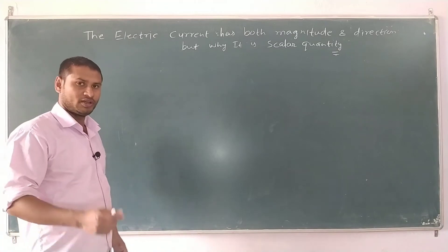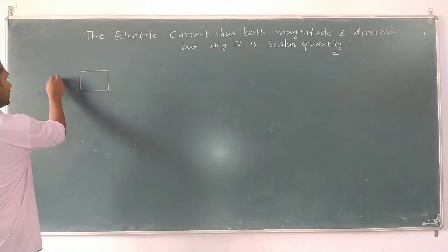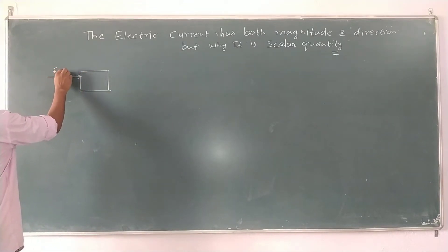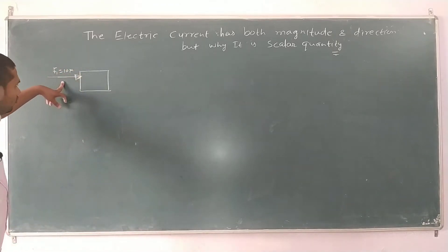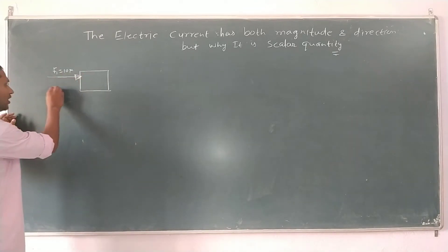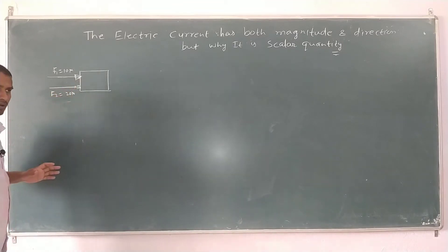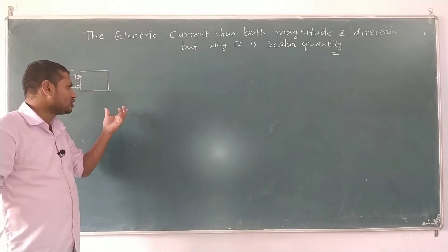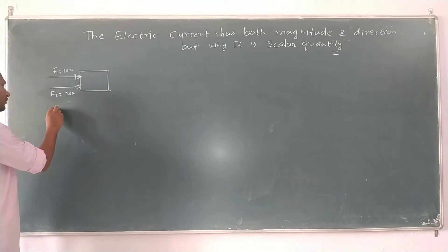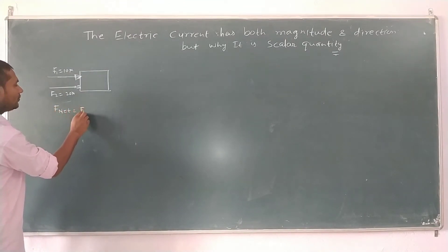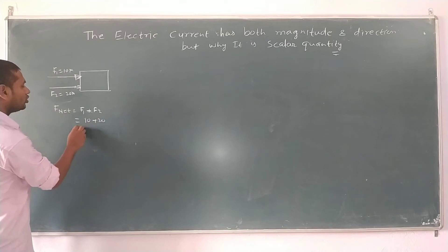First of all, we have to see what is the vector law of addition. Suppose there is a block, and a force F1 of 10 Newton is acting on it, and another force F2 of 20 Newton is also acting on the block. Then the net force F_net equals F1 plus F2, which is 10 plus 20, equal to 30 Newton.